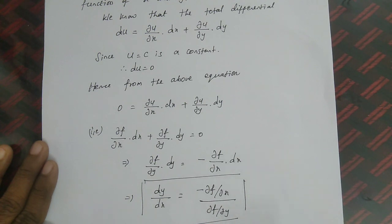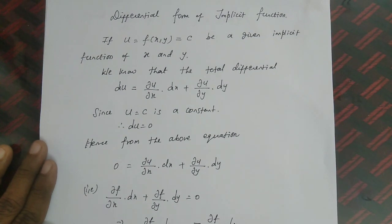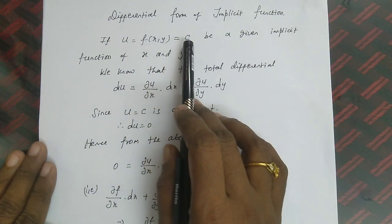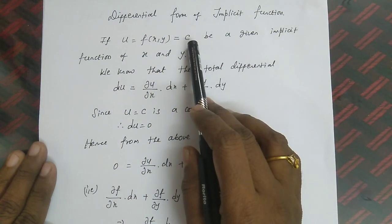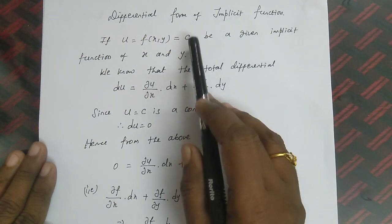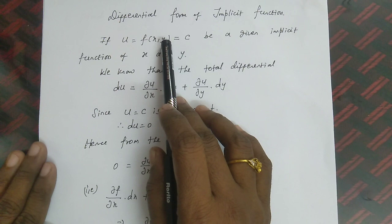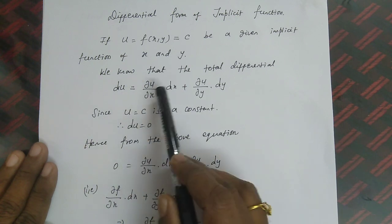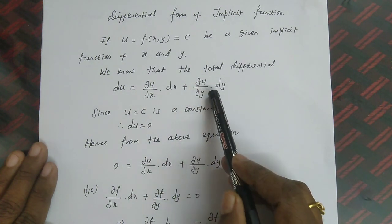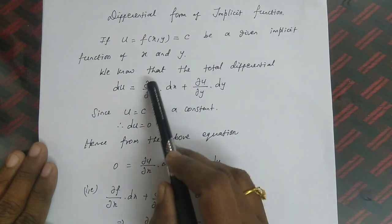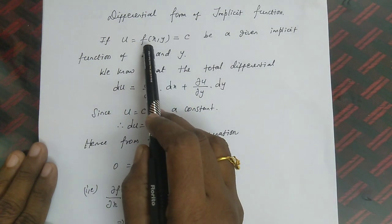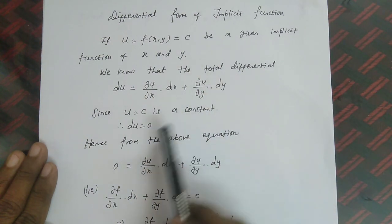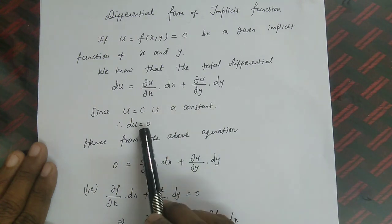This is a very important result under the differential form of implicit functions. If u = f(x, y) and u is taken as a constant, then differentiation of u is 0 — we know that differentiation of a constant is 0. We already have u = f(x, y), and the total differential coefficient du = (∂u/∂x)dx + (∂u/∂y)dy was discussed in the previous lecture.